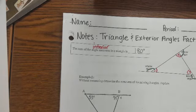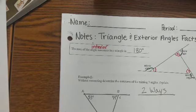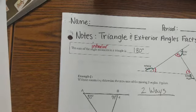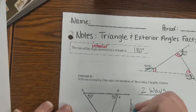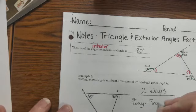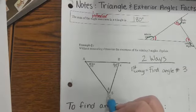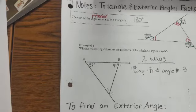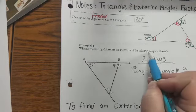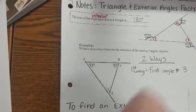Let's do it this way — we've got two ways. First way: find angle three. So here's angle number three right here. We know that the interior angles equal 180 degrees, and we're trying to find the three missing angles: three, four, and five. So we're going to find angle number three.